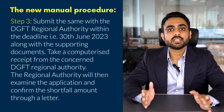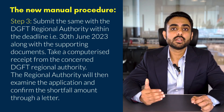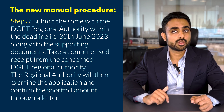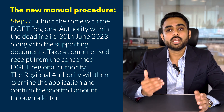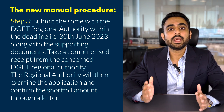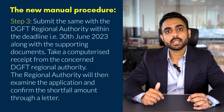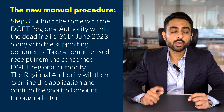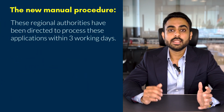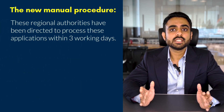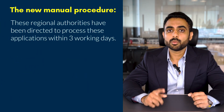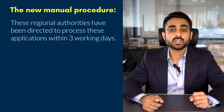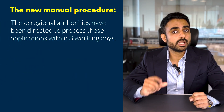Take a computerized receipt from the concerned DGFT regional authority. The regional authority will then examine the application and confirm the shortfall amount through a letter. These regional authorities have been directed to process these applications within 3 working days.